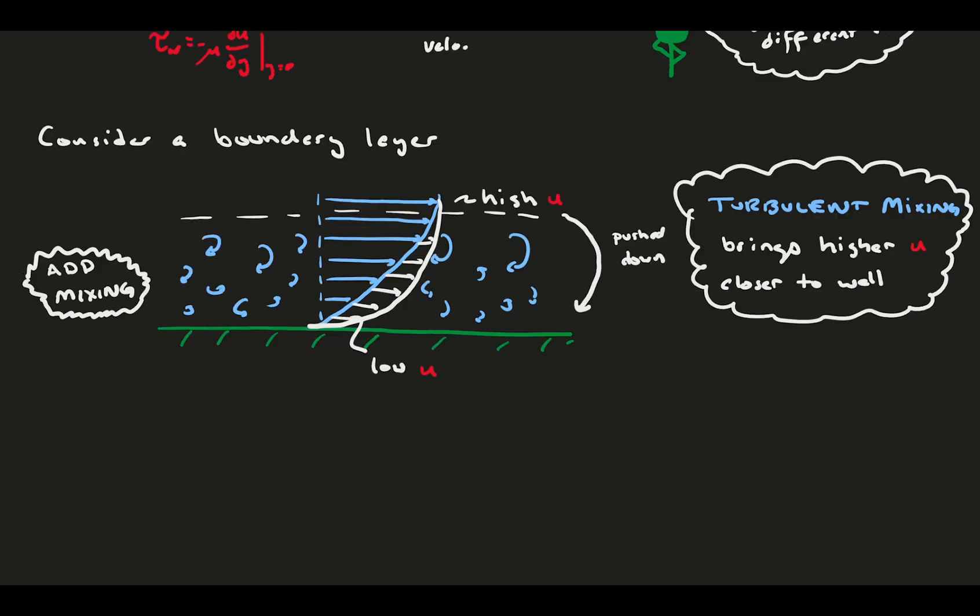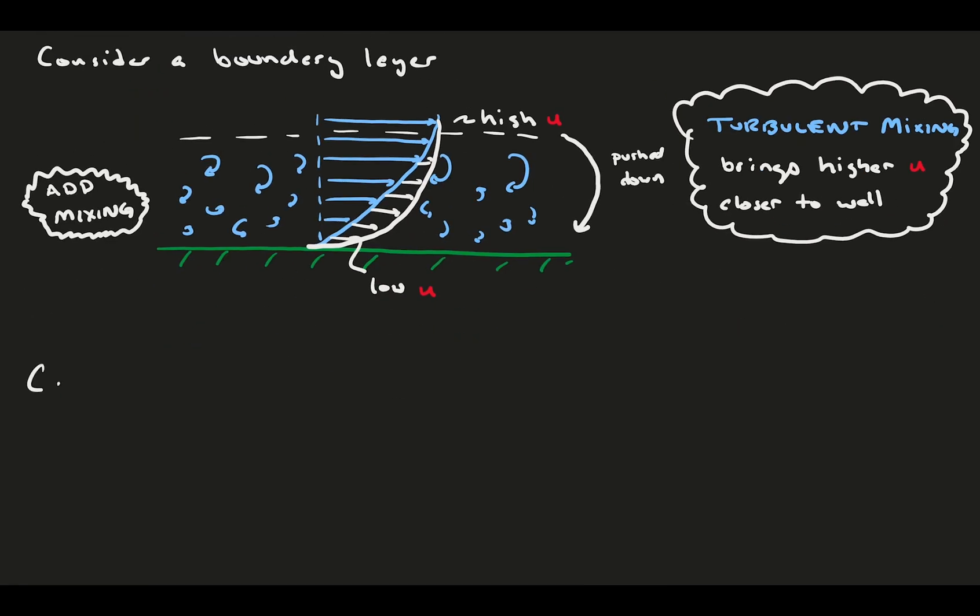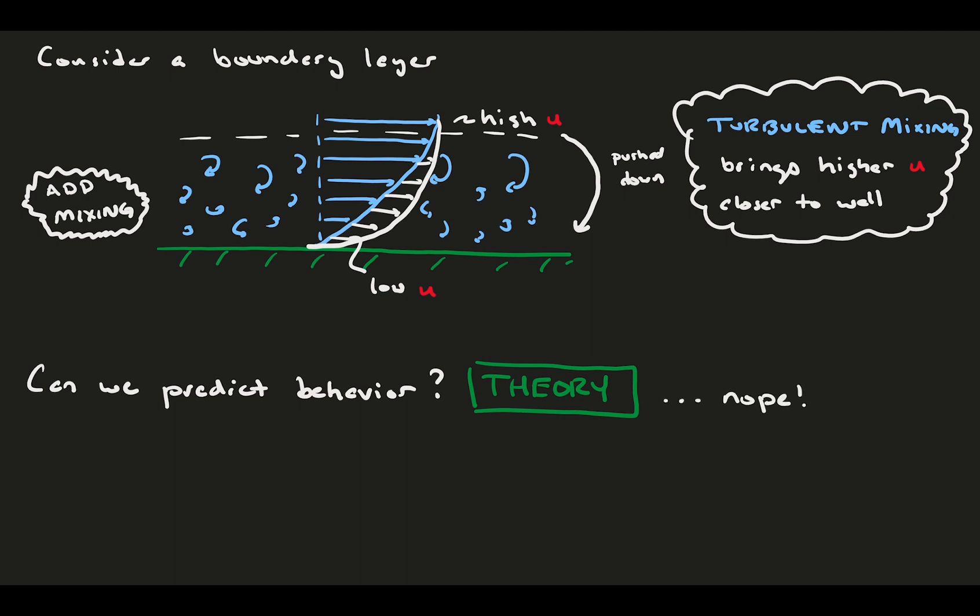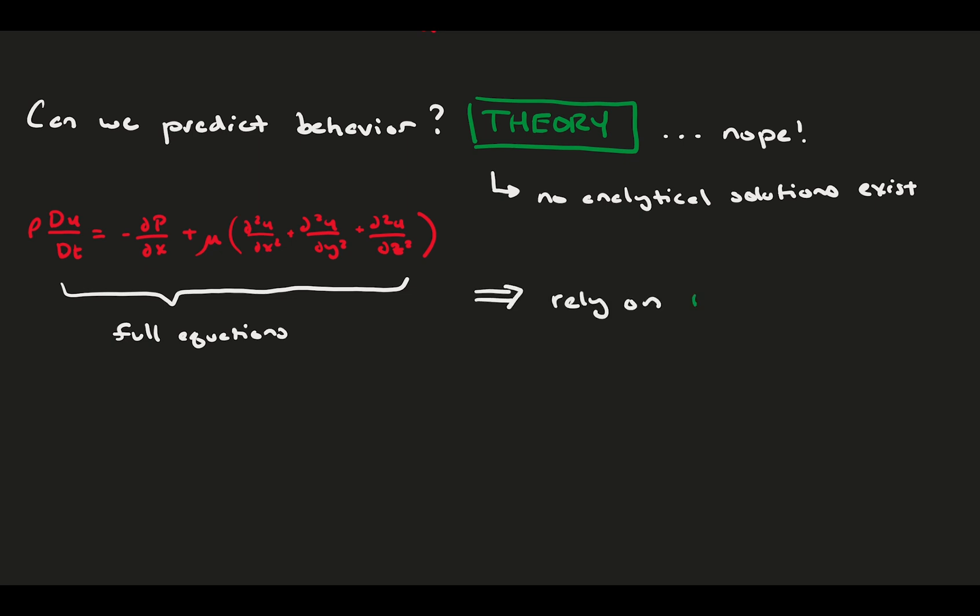Now that we've covered the physical behavior, typically at this point we would jump into the theory and have some fun writing our conservation equations and canceling terms based on assumptions. Not today. Turbulent boundary layers, even in the time average, just don't have full analytical or numerical solutions. We would have to deal with the nearly full Navier-Stokes equations, which are famously unsolvable. So we rely on empirical relations.